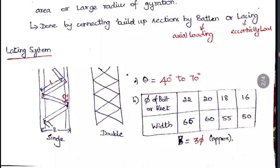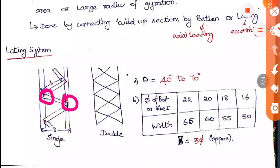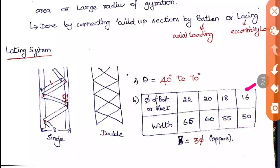The width of the lacing is based on the diameter of the bolt or rivet used at the connection points. When the diameter is 22 mm, width = 65 mm; diameter 20 mm gives 60 mm; diameter 18 mm gives 55 mm; diameter 16 mm gives 50 mm. This is approximately 3 times the diameter, which is a useful way to remember these values.